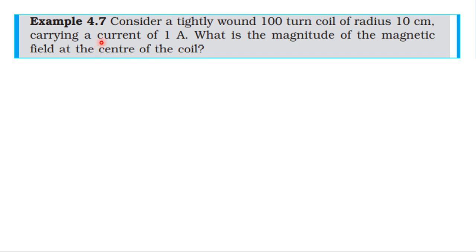From the NCERT textbook, from the topic moving charges and magnetism, example 4.7. Consider a tightly wound hundred turn coil of radius 10 cm carrying a current of 1 ampere. What is the magnitude of the magnetic field at the center of the coil?